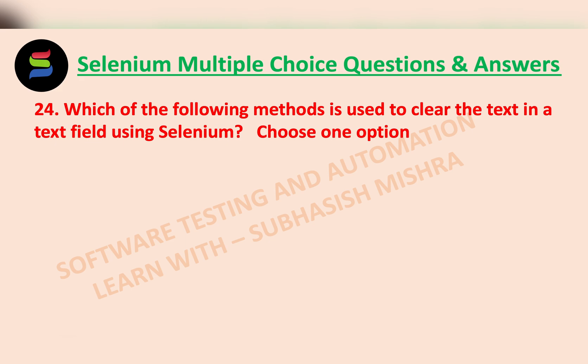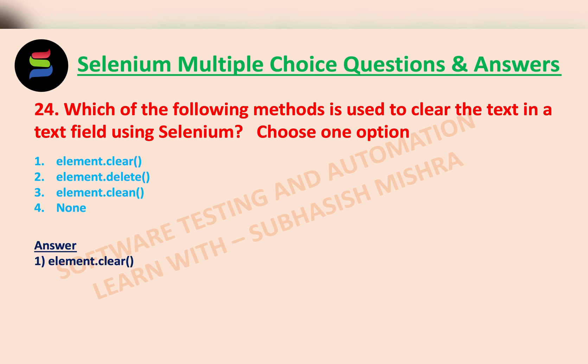Which of the following methods is used to clear the text in a text field using Selenium? You need to choose one option — we have four different options. The correct answer is element.clear(), the very first option. The clear() method is used to clear the text in a text field.